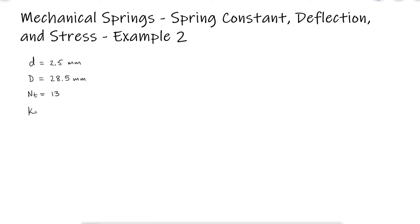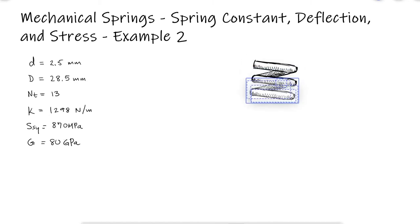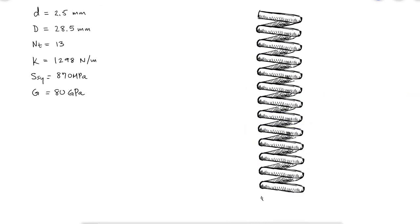For the helical compression spring that we used during example 1, link below, what should the free length be to ensure that when the spring is compressed solid, the torsional stress does not exceed the yield strength?